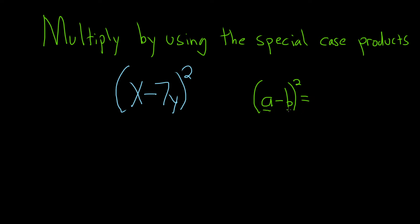So think of A as your first one and B as your second one. So you square the first one. You keep the sign, so there's a minus, so you keep it.